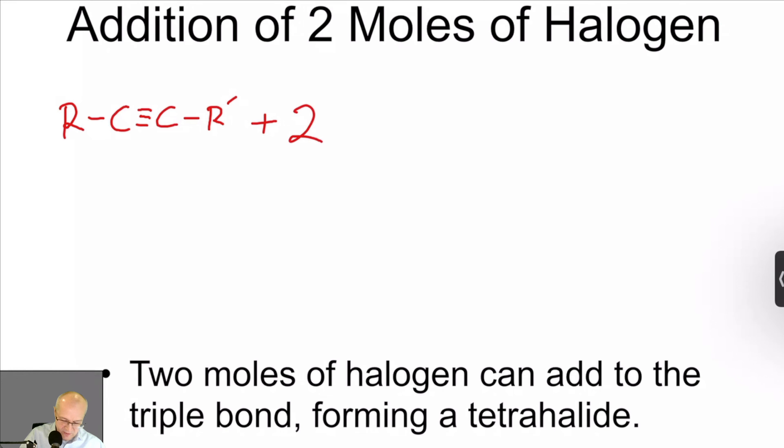Two moles now of X₂, where it's chlorine or bromine. And now you will get... And the mechanism of this reaction is basically the same as adding across a double bond. It's X-chlorine or bromine. Okay? And you get about 100% yield of this. This is a very good reaction.